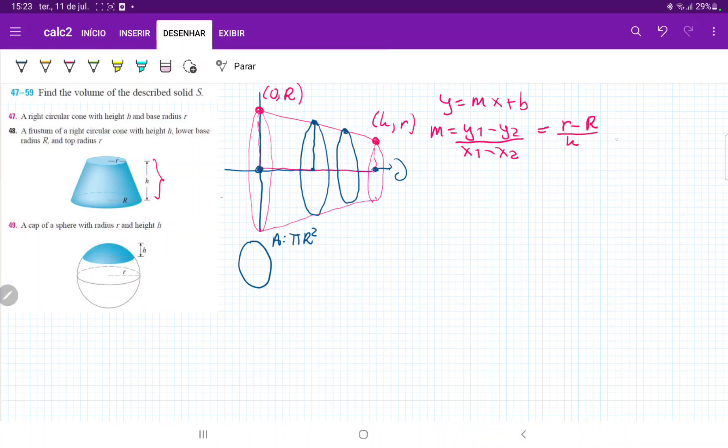And then so our line becomes y is equal to little r minus capital R over h, times x, because that's our slope, our m, plus b. b is the y-intercept, but we can see here that it crosses the y-axis at capital R.